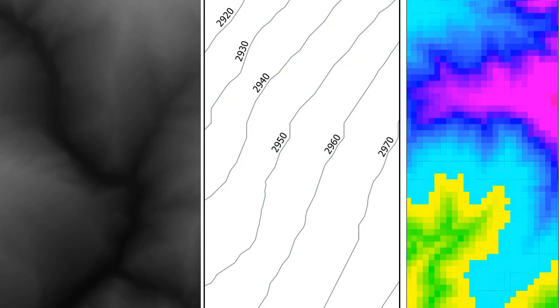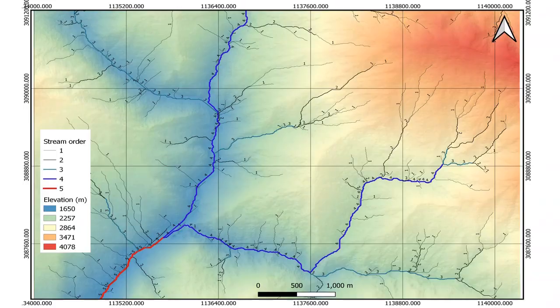The stream order map requires topological data such as contours or digital elevation models. The higher the data resolution, the more accurate the stream order map. Please see the link above to learn how to create a stream order map exactly like this using QGIS.